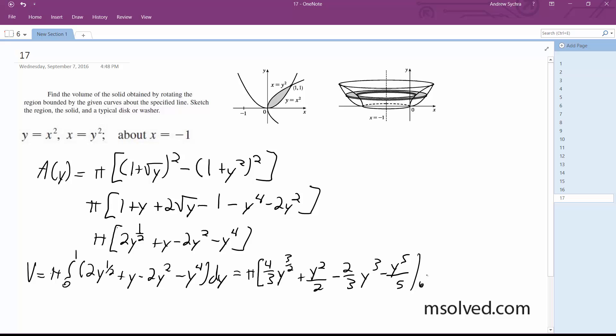from 0 to 1 is equal to π times 4/3 + 1/2 - 2/3 - 1/5. And simplified down this becomes V is equal to, volume is equal to 29 over 30π.